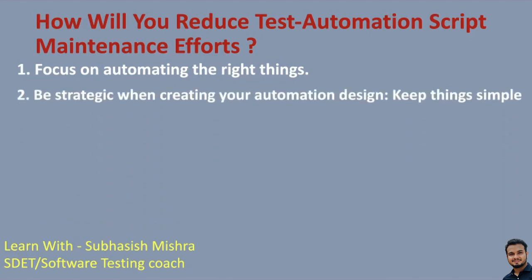Be strategic when creating your automation design — keep things simple. If you want to keep maintenance low, you need to keep scripts simple. If you are writing test automation scripts using Selenium, try to write simple scripts as much as possible. It will help you execute low-level test cases quickly, it will be easy to maintain, and it will decrease maintenance efforts. Also, try to write independent test cases and avoid very large test cases — if a test case has a lot of steps and validations, you should avoid those. Your test cases should be short and independent to avoid flakiness.